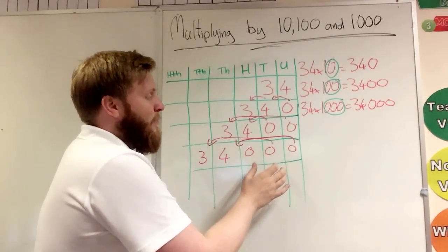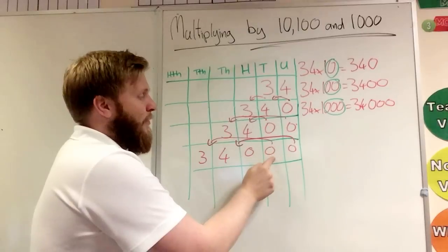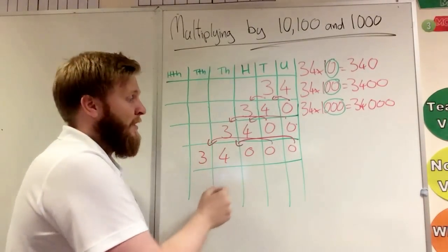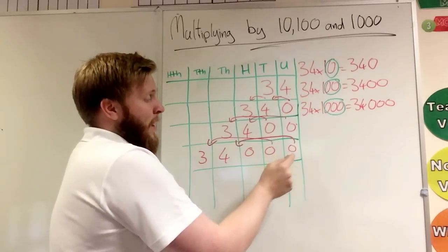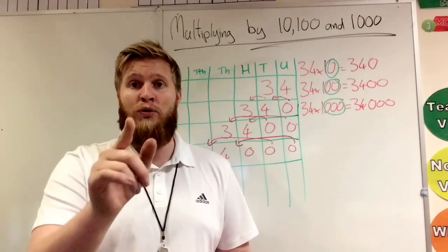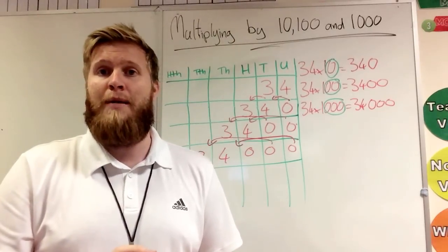With the thousand, we're making the numbers a thousand times bigger. So thirty becomes thirty thousand, and four becomes four thousand. And we fill in the spaces with zeros. That is what we're actually doing. And I'm going to show you why that's important to remember.